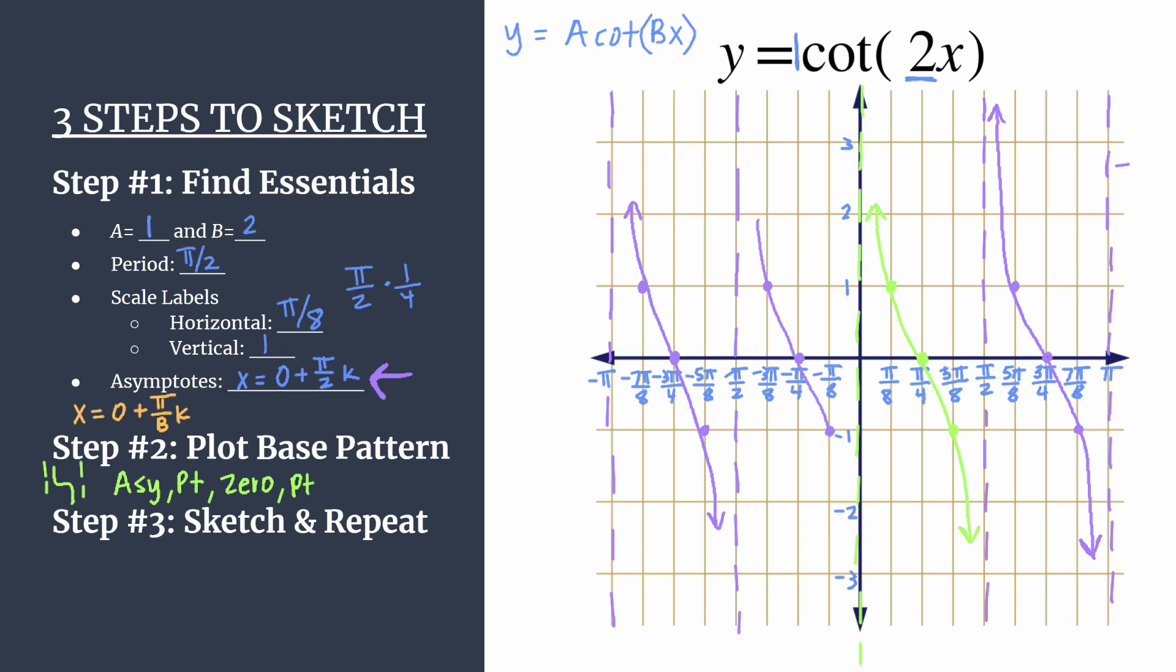And we have a really nice graph of y equals cotangent 2x. We have four whole cycles of this. Something interesting to note before we finish up here, remember we said that b is two, and we said that that means we should have two cycles of our graph happening between zero and pi.